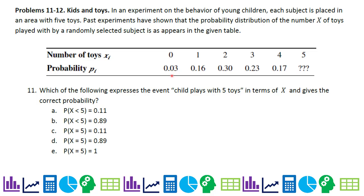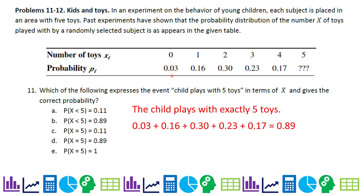Problems 11 and 12: in an experiment on young children, each subject is placed with five toys. The probability distribution of x (number of toys played with) is given in a table. For problem 11, we need the probability that a child plays with exactly 5 toys. Add all other probabilities and subtract from 1 to get 0.11.